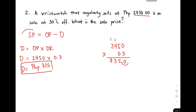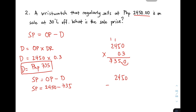We're not yet done because we are asked for the selling price. Using the formula SP = OP − Discount: SP = 2,450 − 735. Subtracting: 0 − 5, borrow; 5 stays; 4 − 3 is 1; borrow from the thousands — 14 − 7 is 7; so you get 1,715. Your selling price is 1,715 pesos. This is the correct answer for item number 2.